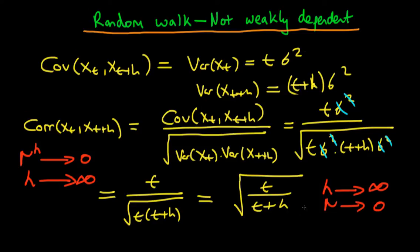But the problem with this correlation is that we can always choose some t which is arbitrarily large such that the correlation between xt and xt plus h doesn't go to 0. Strictly, this doesn't meet the condition for a process to be weakly dependent because the correlation does not go to 0 fast enough.